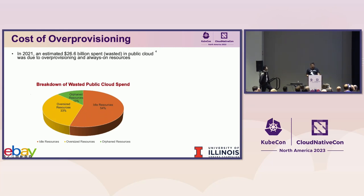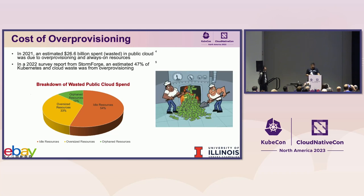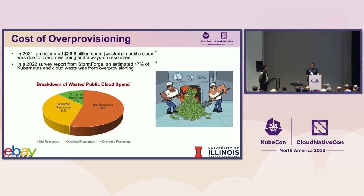Why should we care? It's simple — because there is no planet B. And there is also the dollar cost: $26.6 billion were estimated as wasted cloud spending in 2021, with 40% of IaaS instances over-allocated, tallying to $8.7 billion in overspend. Another report estimated 37% of compute resources allocated were never used, and a survey found 47% of cloud waste came from over-provisioning. About half the resources are wasted — this is an expensive problem affecting company bottom lines and consumer wallets.